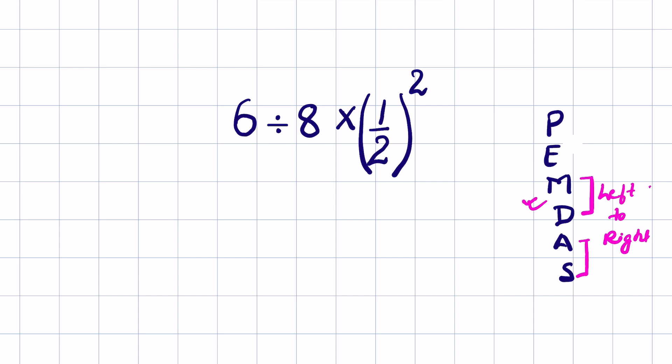So 6 divided by 8 times 1 upon 4. Now going from left to right we have division first.